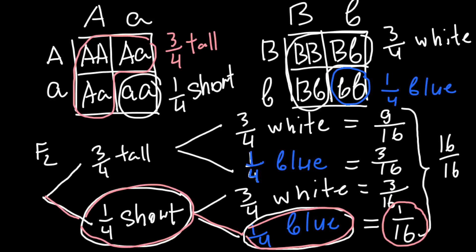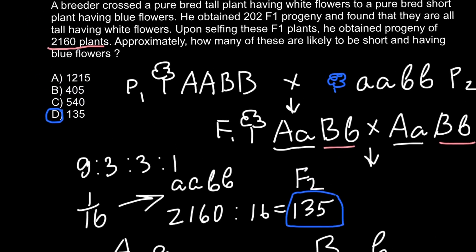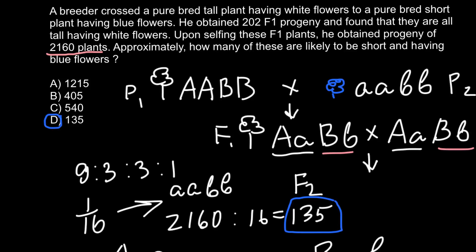If we add all these numbers — 9/16 plus 3/16 plus 3/16 plus 1/16 — we get 16/16, which equals one, or 100%. This confirms our phenotypic ratios are correct. Once again, short and blue is one-sixteenth. All we have to do now is multiply by 2160 to get the same answer of 135 as before. This problem can be approached in different ways, but today I wanted to show you how to solve genetics problems using the forked line method.